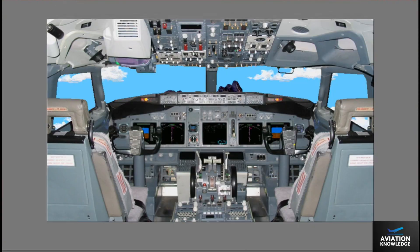The Common Display System, or CDS, has two functions. It supplies data to the flight crew about the airplane and its systems, and it permits the flight crew to control the displays.